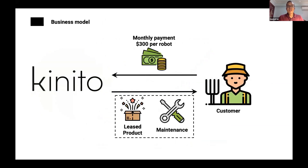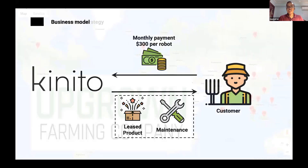Our business model is similar to a subscription model and can be described as hardware as a service. The customer pays a monthly payment of $300 per robot, and in return we lease our product to them, including maintenance such as services and repairs. This is easier to sell because of the lower cost, changes a one-time transaction into a long-lasting relationship, and means the customer doesn't have to worry about depreciation.